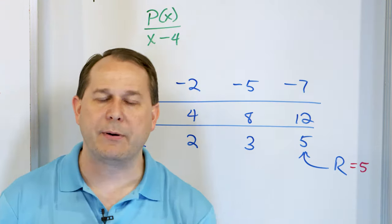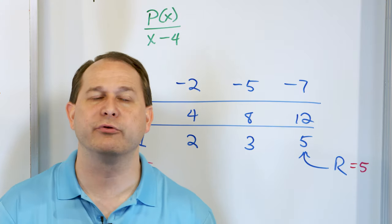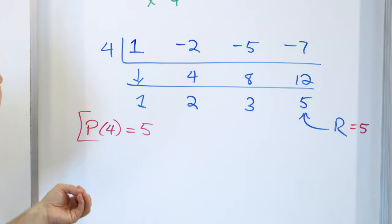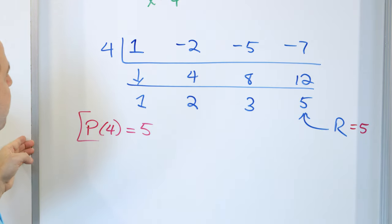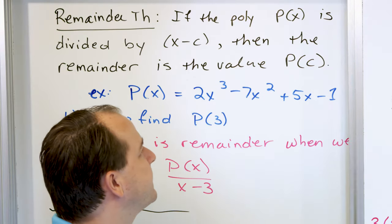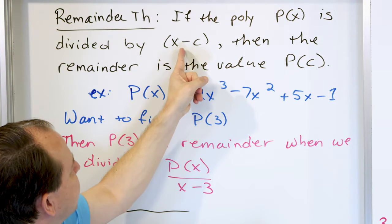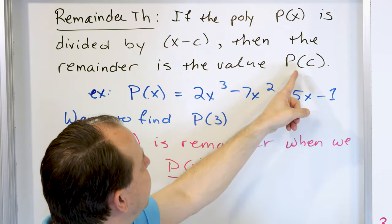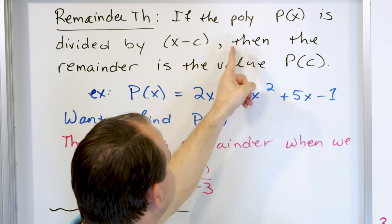The remainder of a polynomial when it's divided by x minus a number is always equal to the polynomial evaluated at that number. So the better way to think about it: if a polynomial is divided by x minus c, then the remainder when you do that division is the value p evaluated at c. These are always going to be the same number.